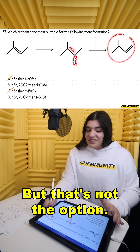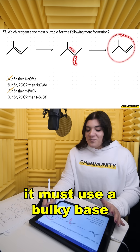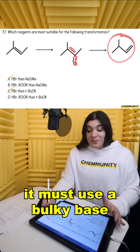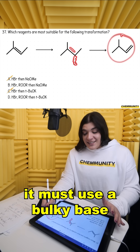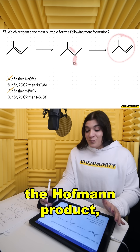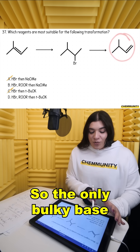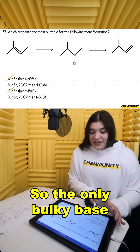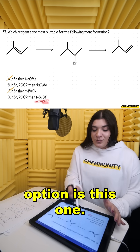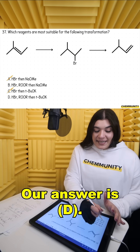But that's not the option shown. So I know that I must use a bulky base to get the Hofmann product, which is this. The only bulky base option is this one. Our answer is D.